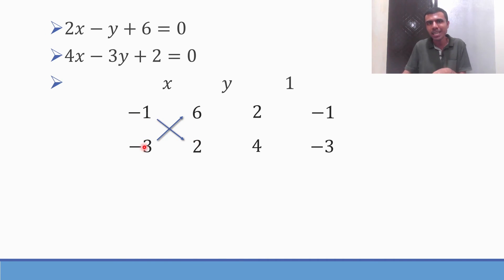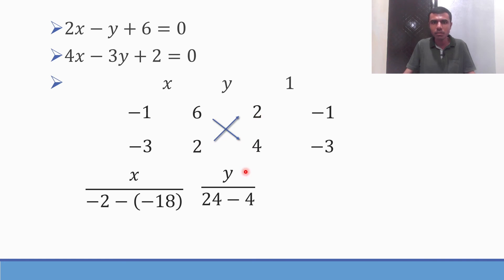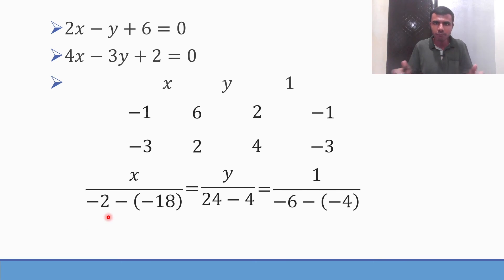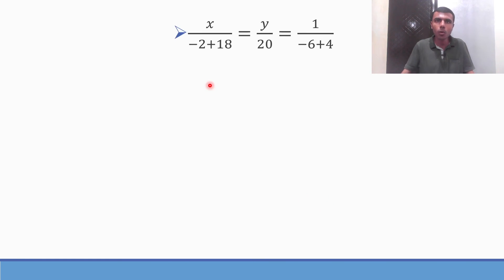Setting up cross multiplication: X by (minus 1 times 2 minus minus 3 times 6) = X by (minus 2 minus minus 18) = X by (minus 2 plus 18). Then Y by (6 times 4 minus 4 times 2) = Y by (24 minus 4). And 1 by (2 times minus 3 minus minus 6 times 4 plus minus 1 times minus 4).